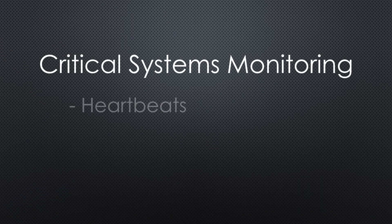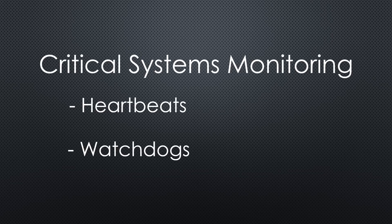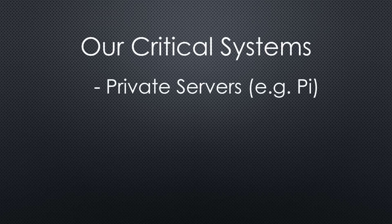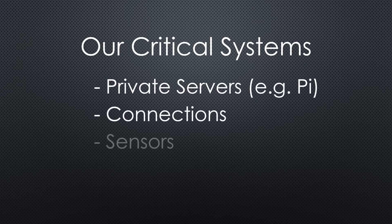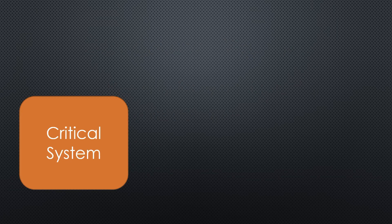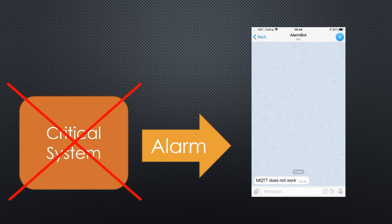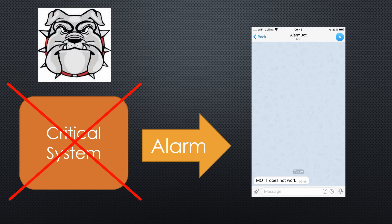Critical systems often use heartbeats or watchdogs for monitoring. We will use both to supervise our private servers like the Raspberry Pi, connections, sensors and actuators. The principle is simple: if something does not work as expected, we create an alarm via the Telegram app on your smartphone. But we cannot create an alarm on a server that no longer works, so we have to use a watchdog as a supervisor — it alarms us if something with the server is wrong.